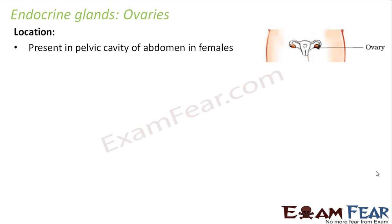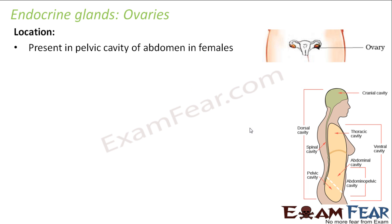Looking at the structure of a female, at the back side you have the spinal cavity where the spinal cord is located. Below that is the pelvic cavity. From the front side, the cavity related to the brain is the cranial cavity, next is the thoracic cavity bounded by the thorax, then the abdominal cavity containing the stomach and intestines. The lower part is the pelvic cavity, and sometimes the abdominal cavity and pelvic cavity together are known as the abdominal pelvic cavity.